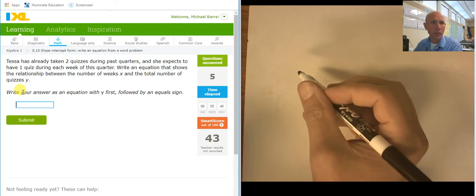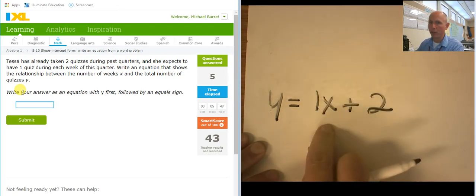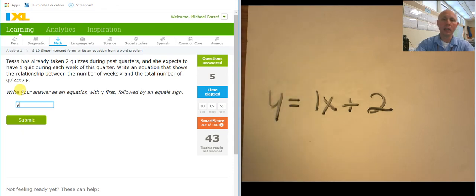She's already taken two quizzes, and she's going to do one each week. So, y equals, she's already taken two, and one each week. So, on week zero, she's already taken two. On week one, she's taken three. On week two, she's taken four. Once again, I'm going to drop off the one on the x. Just go with y equals x plus two.